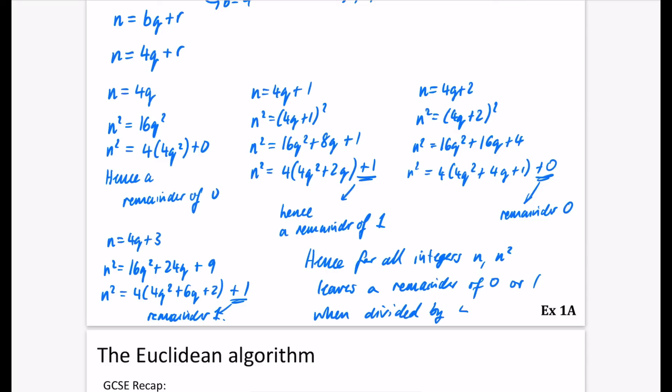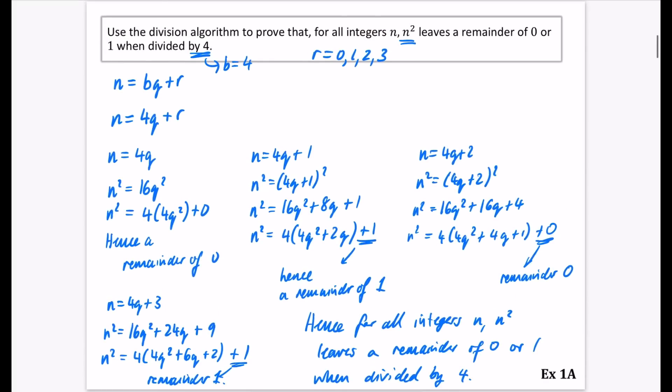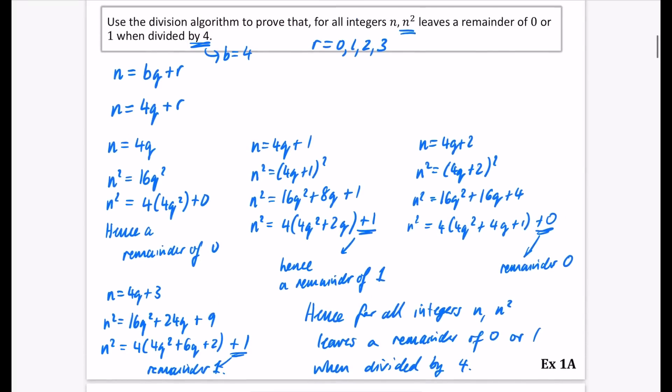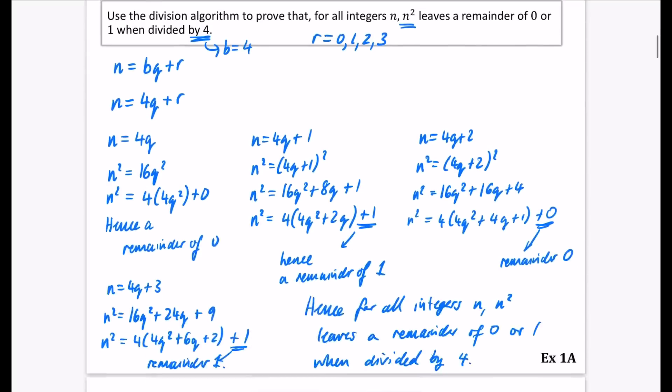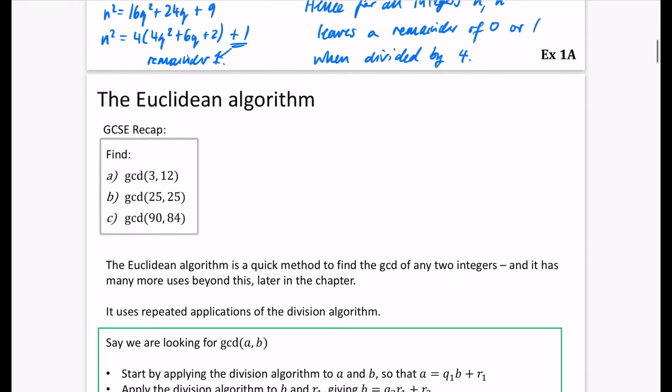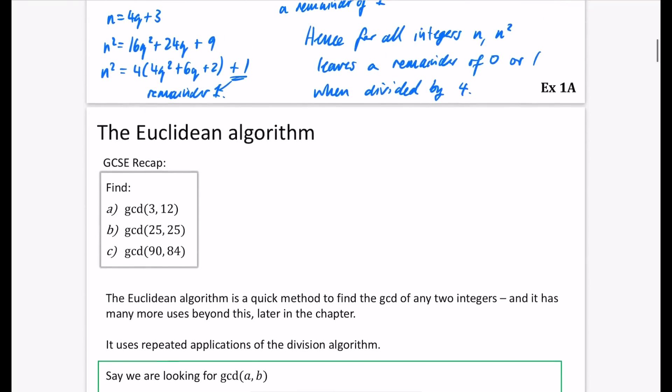And I think there's a couple of questions like this in the exercise. So now we've done enough for you to go and have a look at everything from exercise 1a on the division algorithm. Okay, so yeah, pretty straightforward at this point. Things do take a little bit more of a step up in the next video when we look at the Euclidean algorithm.